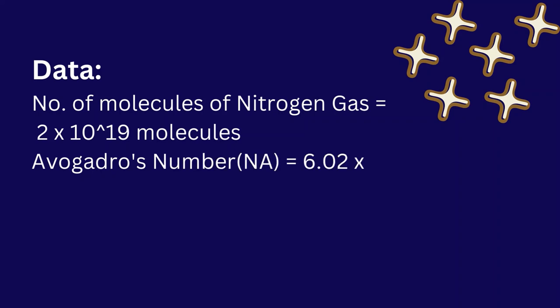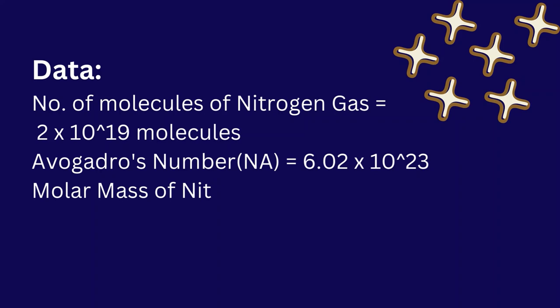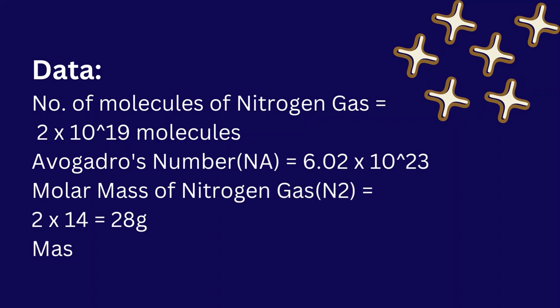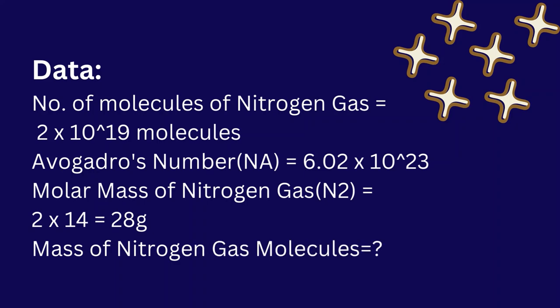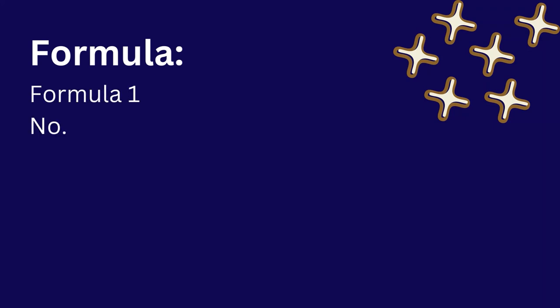Avogadro's number, N_A equals 6.02 into 10 to the power of 23. Molar mass of nitrogen gas, N₂, equals 2 into 14 equals 28 grams. Mass of nitrogen gas molecules — have to calculate. Formula first.